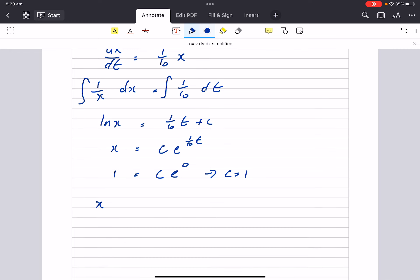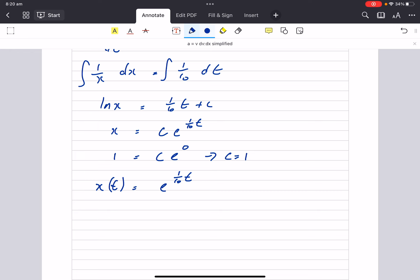So my displacement time function is just going to be e to the one tenth t. Now we're back in familiar territory. Grade 11. We can differentiate that to get our velocity time function and acceleration time function will be differentiated again.